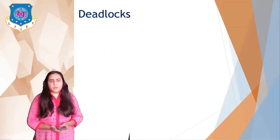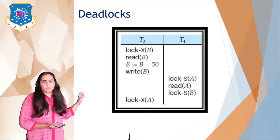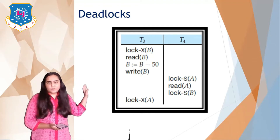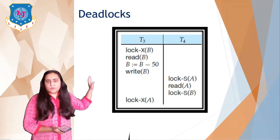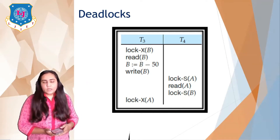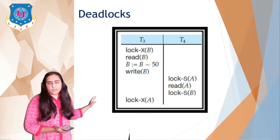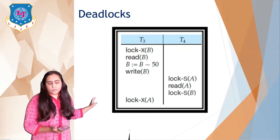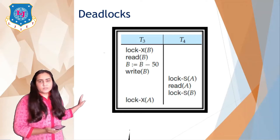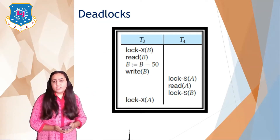First we are going to see when a deadlock is created. In this example you can see that in T1 transaction there are two transactions T3 and T4. In T3 you can see that there is an exclusive lock taken on B, then T3 is reading B, subtracting 50 from B, and after that writing B. Now notice that T3 has not yet unlocked B, and T4 has obtained a shared lock on A and then is performing a shared lock on B. So T3 and T4 are both holding one lock each at this point.